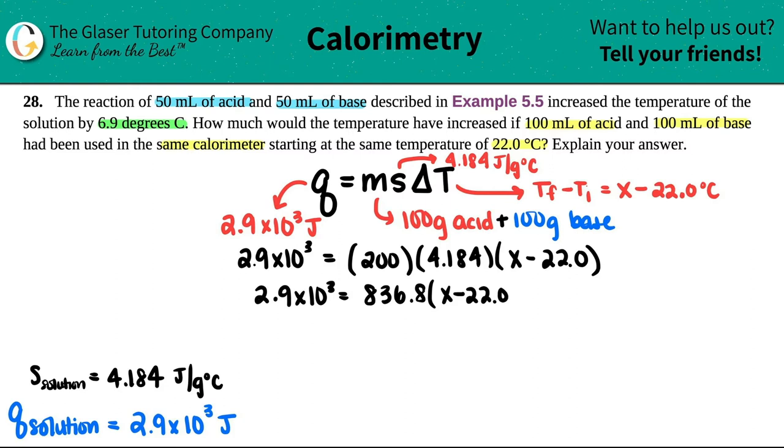And now here comes everybody's favorite part of algebra. When you have multiple things going on in parentheses and then you have a number outside of it, you got to distribute, you got to play fair. So you got to multiply that number by the X and by the negative 22. So 2.9 × 10³ equals 836.8X minus whatever 836.8 times 22.